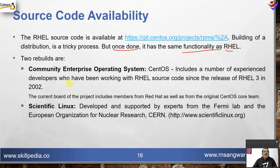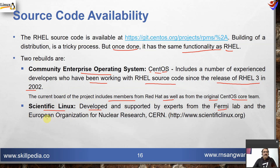Two rebuilds available are: first, CentOS — Community Enterprise Operating System — which includes experienced developers who have been working with RHEL source code since RHEL 3 in 2002. The current board includes members from Red Hat as well as from the original CentOS core team. Second, Scientific Linux, developed and supported by experts from Fermi Lab and CERN — the European Organization for Nuclear Research — available at scientificlinux.org.